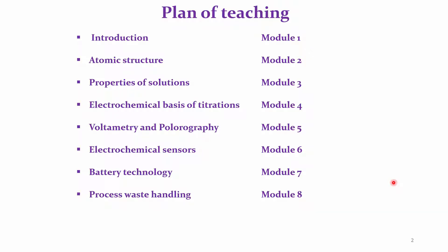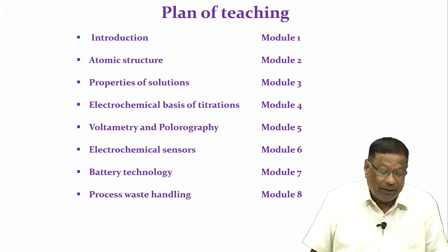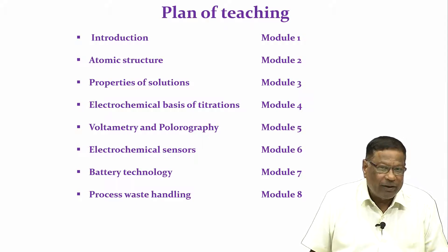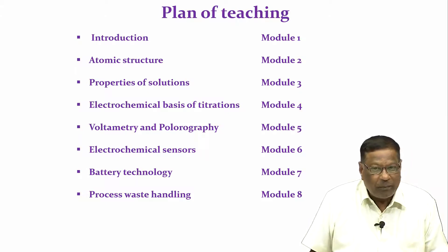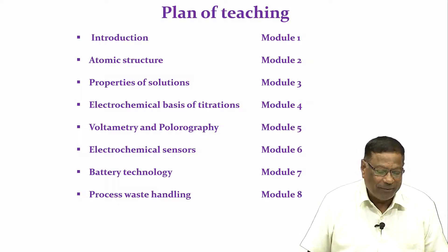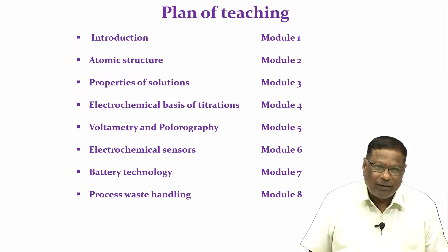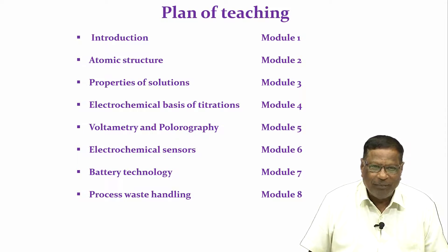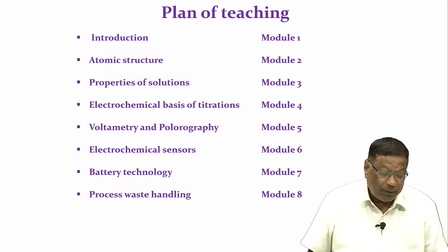Module 5 covers electroanalytical techniques, which will enable us to determine pollutants and metal ions in solution at parts per billion and parts per trillion levels. We have moved away from wet chemistry or bucket chemistry since the last 20-25 years. We are going to talk only about microliters and milliliters — and also about electrochemical sensors: what they are made of, how they work, and in what context they are useful.